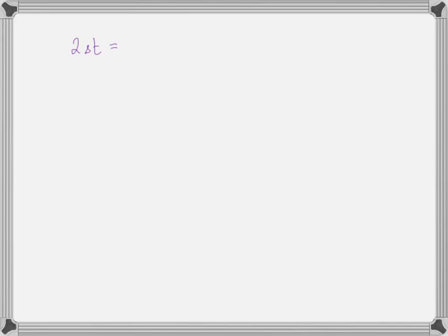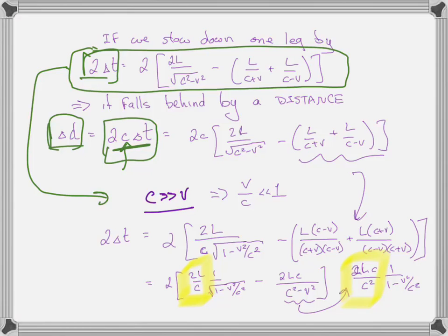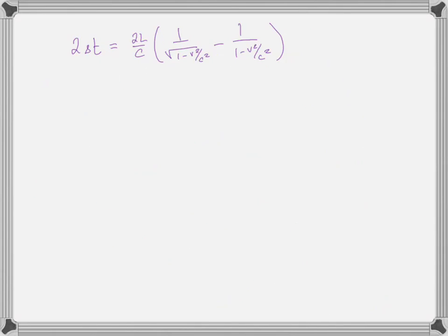And so what we end up getting is 2 delta T, which is the total time difference. Rather than writing a different delta T, we just keep writing 2 delta T, which is the total time difference when we rotate the Michelson Morley apparatus 90 degrees, is equal to 2L over C times, not the square root, times 1 over the square root of 1 minus V squared over C squared plus 1 over 1 minus V squared over C squared. It is not a plus, it's a minus. That's just copied from the other page. There's a factor of 2 right here. So therefore, 2 delta T is equal to 4L over C.